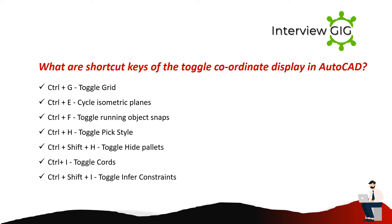What are the shortcut keys for toggle coordinate display in AutoCAD? Ctrl+G — toggle grid. Ctrl+E — cycle isometric planes. Ctrl+F — toggle running object snaps. Ctrl+H — toggle pick style. Ctrl+Shift+H — toggle height palettes. Ctrl+I — toggle coordinates. Ctrl+Shift+I — toggle infer constraints.